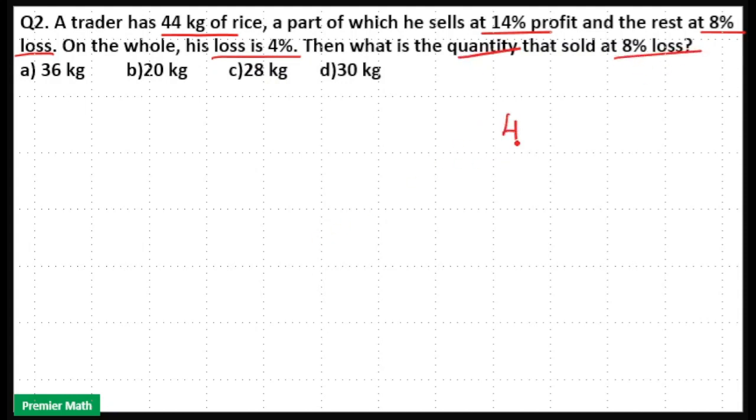So a trader has 44 kilogram rice, part of which he sold at 14% profit. That means it is positive and rest as he sold at 8% loss. That means it is negative. The result of these two processes is 4% loss, that is negative.